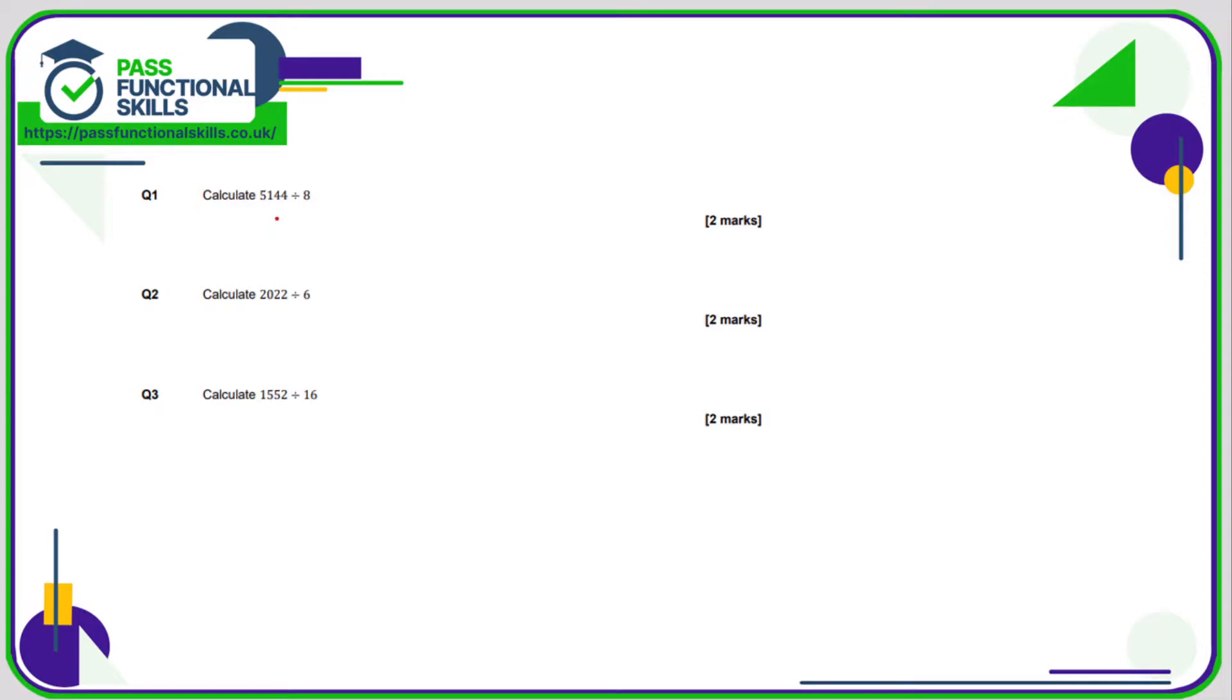So number one, what is 5,144 divided by eight? So we're going to have to use a bus stop. Five divided by eight can't be done, so carry the five across.